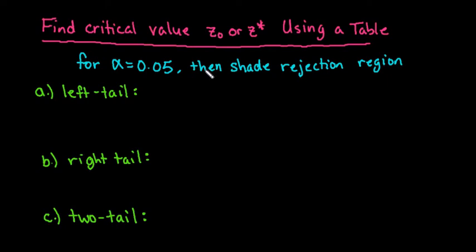Hi, for this video we're going to find critical values for z-naught or z-star, and for this one we're going to use a table. I'm going to do all three scenarios just so that you know how to find them using a table. I will also address this using both the TI-84 and the TI-Inspire.